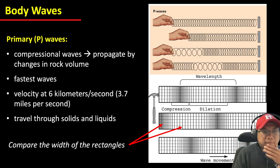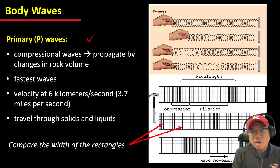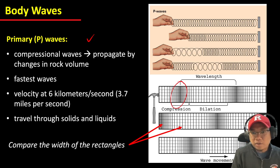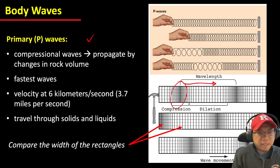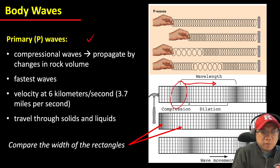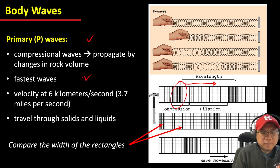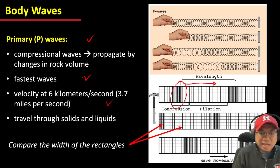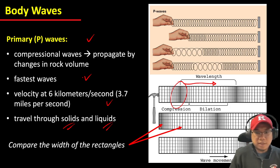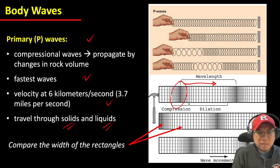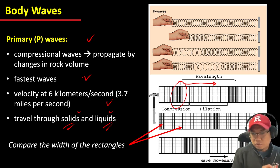The first example of a body wave is called the primary waves, or P waves. P waves are compressional waves because they propagate by changes in rock volume — there are compressed parts of the rock that travel in a given direction. P waves are the fastest waves among all four types, with velocity reaching up to six kilometers per second, and they can travel through both solids and liquids.